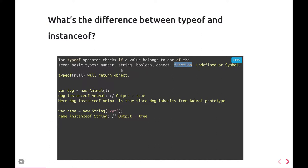If the variable is a string, typeof will give you 'string'. If the variable is a number, typeof will give you 'number'. If you do typeof null it will give you 'object' — this is an important one. If you do typeof undefined it gives you 'undefined'. typeof function returns 'function', and typeof any array or object also returns 'object'.